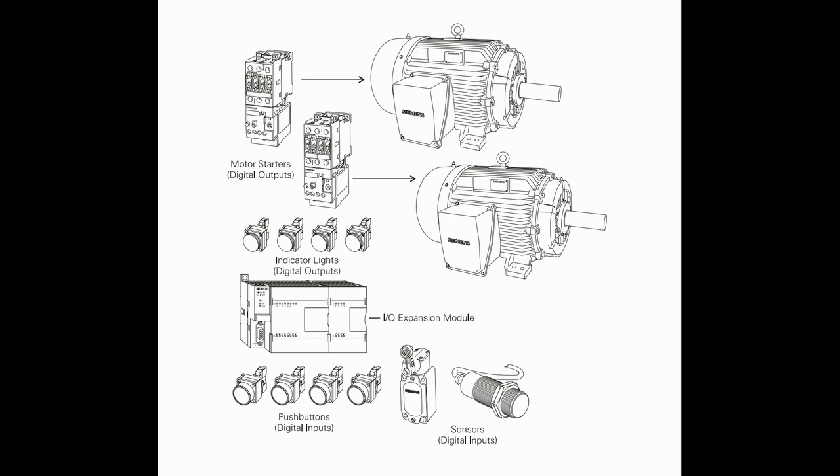Expansion: The PLC program can be expanded to accommodate many commercial and industrial applications. Additional start or stop push buttons and indicator lights can be added for remote operation, or control of a second motor starter and motor. Over-travel limit switches can be added along with proximity switches for sensing object position. In addition, expansion modules can be added to further increase the I/O capability. The applications are only limited by the number of I/O points and amount of memory available on the PLC.